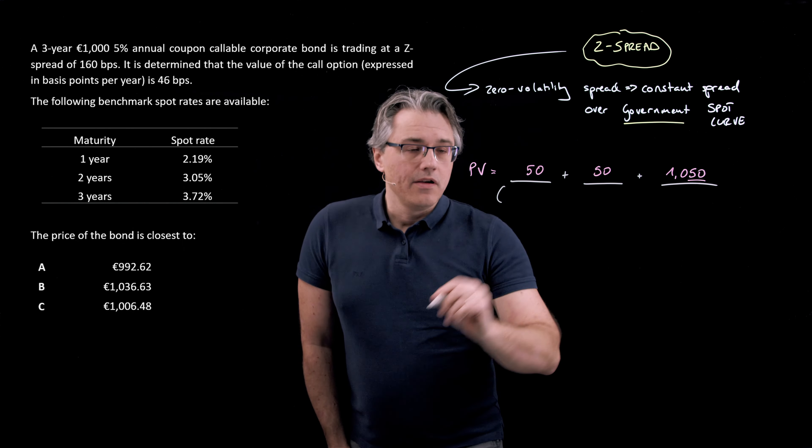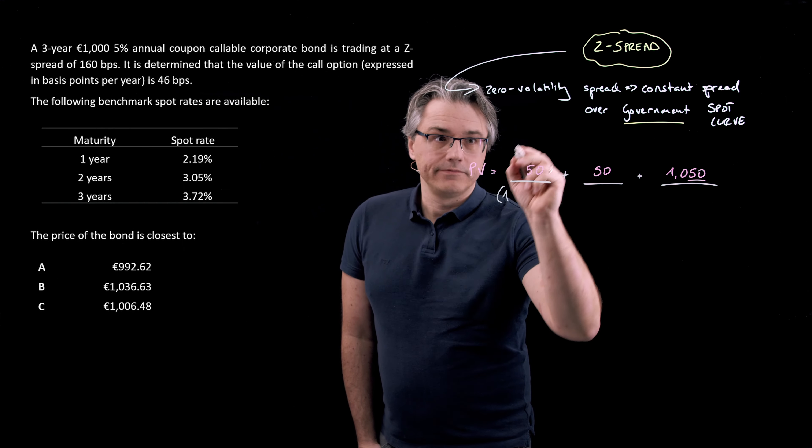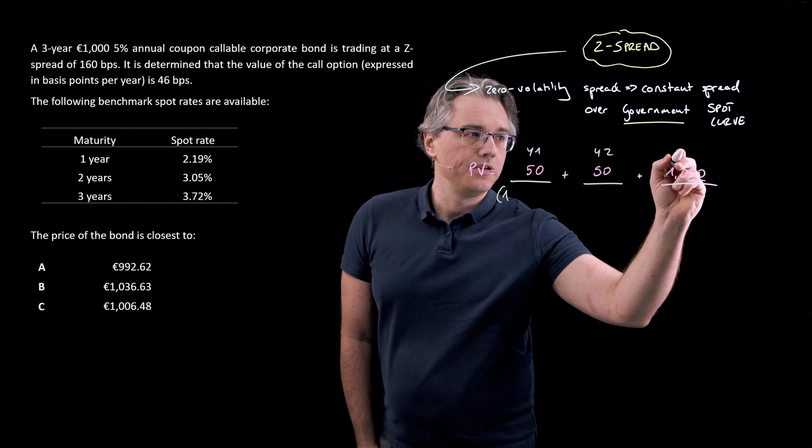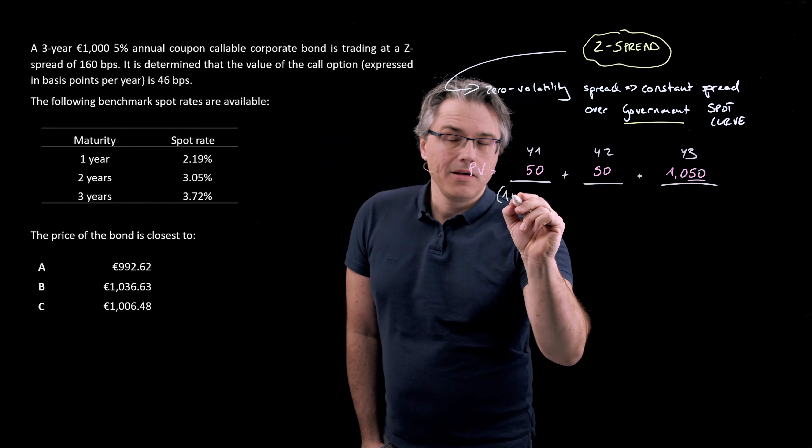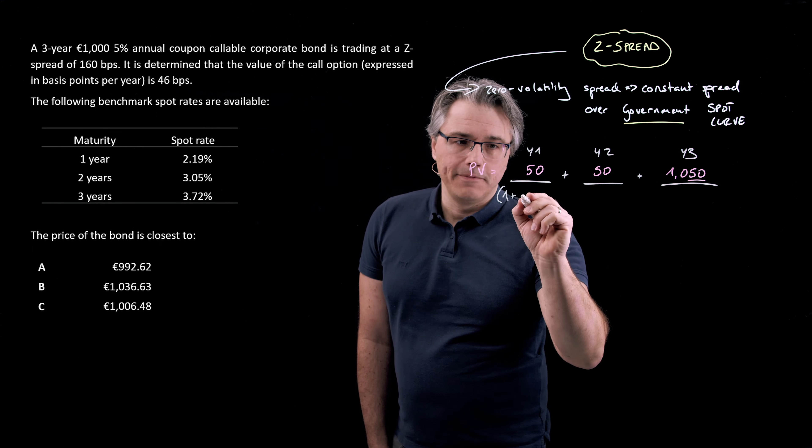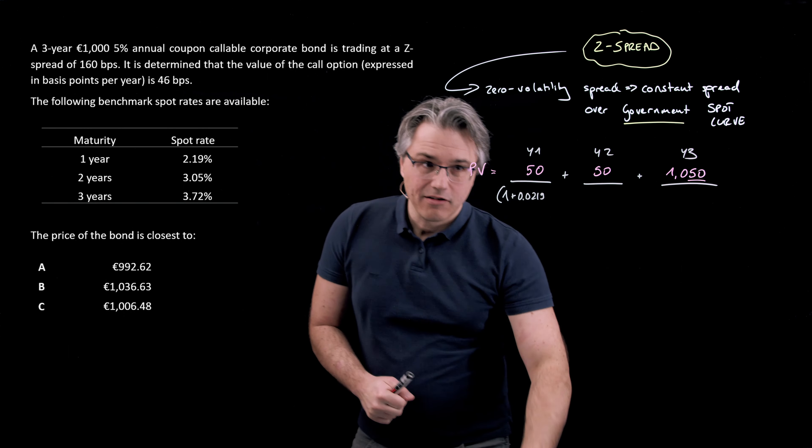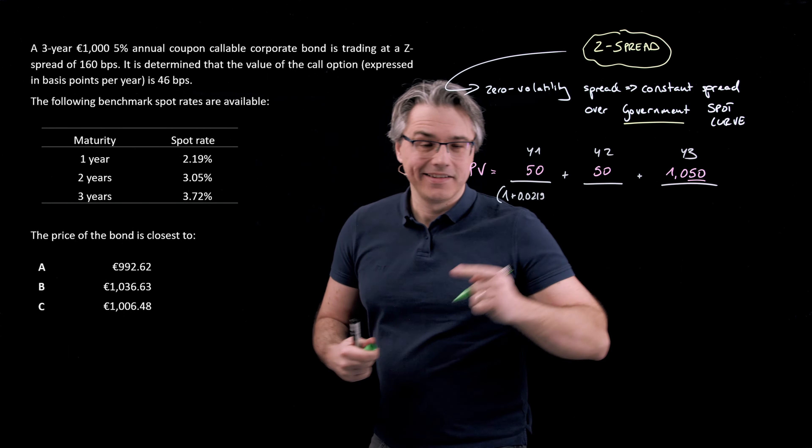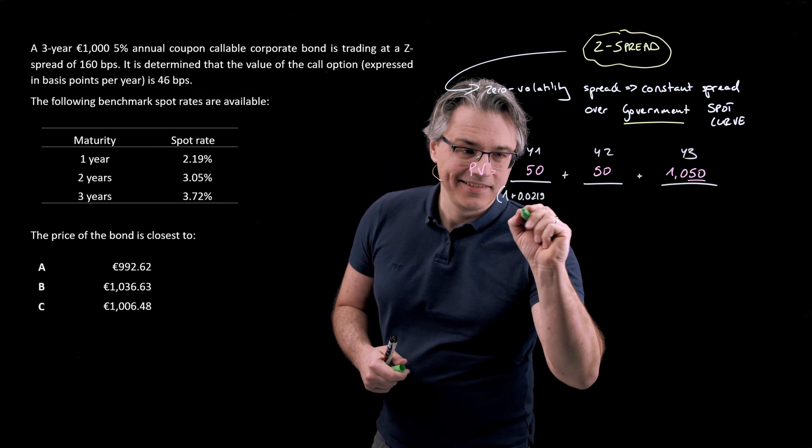I'm going to discount each one of these using the appropriate factor. And this is going to be, for the first one, year one, year two, year three, one plus whatever is the relevant benchmark spot rate. So 0.0219 in this case. And on top of that, we will slap on the Z-spread, which is 160 basis points or 1.6 of a percent. So 0.016.